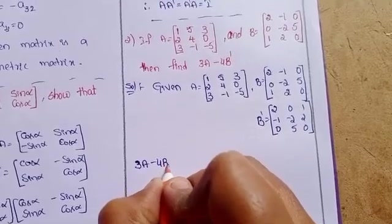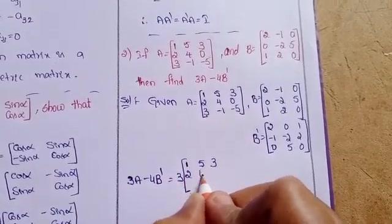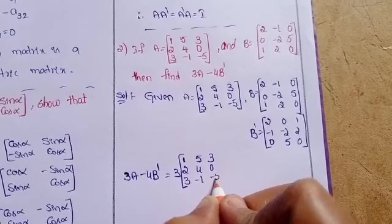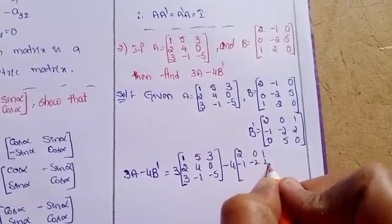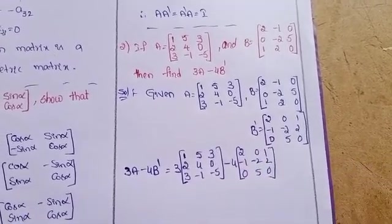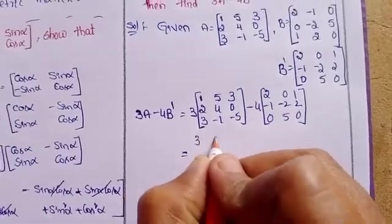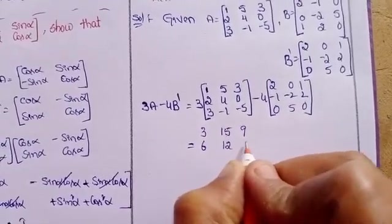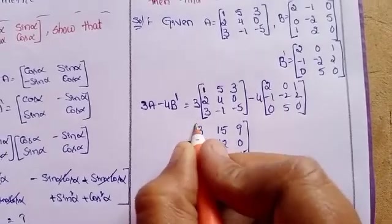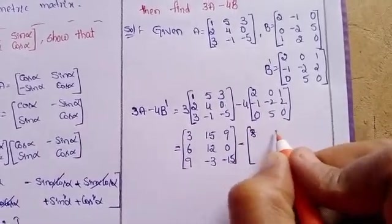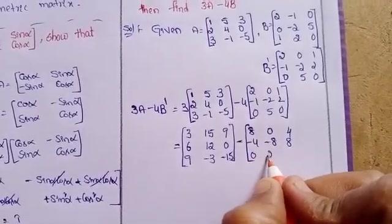3A minus 4B transpose equals 3 times A minus 4 times B transpose. Multiplying A by 3 gives: 3, 15, 9, 6, 12, 0, 9, minus 3, minus 15. Multiplying B transpose by 4 gives: 8, 0, 4, minus 4, minus 8, 8, 0, 20, 0.